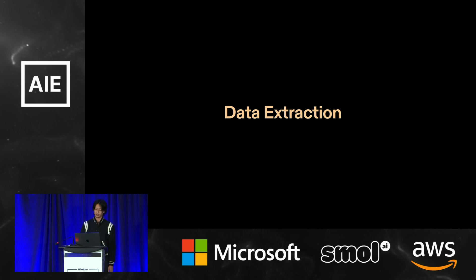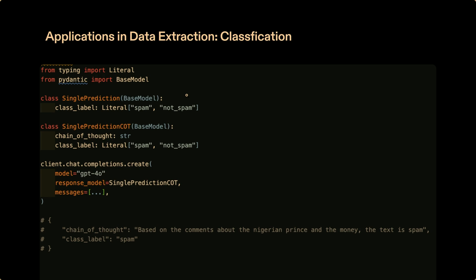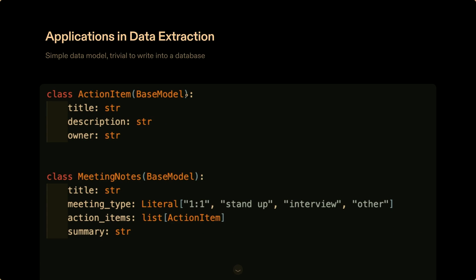Data extraction is really interesting. For labeling, it's easy to just say class label is a Literal of either spam or not spam — you've built a classifier. If you want accuracy to improve by about 15%, you can add a chain of thought. The structure tells you how the language model works, but you still have good validation on whether you're going to get spam or babble. For extracting structured information out of transcripts: you have a classification for meeting type, a title, a list of action items, and a summary. You could imagine having a validator that ensures owners are at least one of the participants of the email based on a Google Calendar integration.